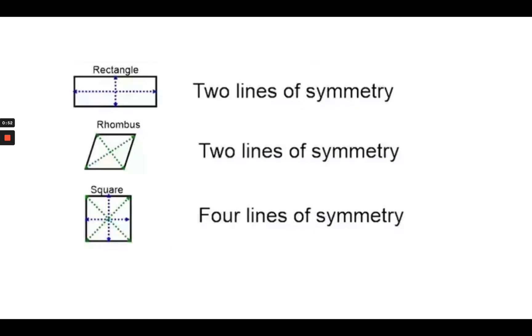Some shapes have more than one line of symmetry. You can see the rectangle and the rhombus. If I were to fold it along those dotted lines, they actually have two lines of symmetry.